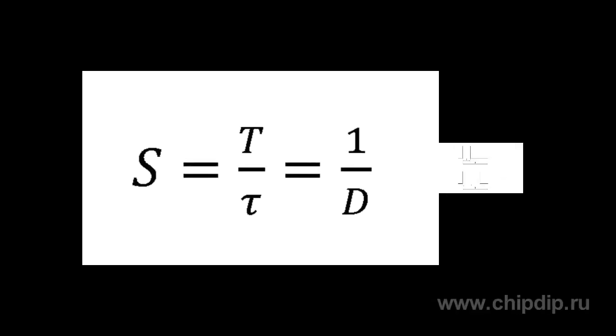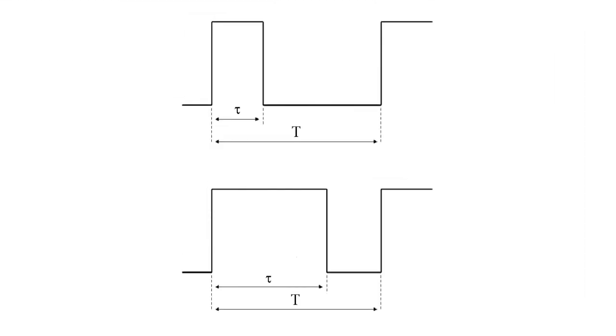The figure shows a random pulsed signal. Its period and pulse duration are designated. Its ratio defines pulse ratio.